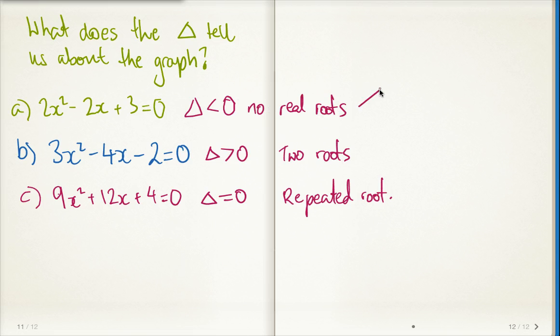So doesn't cut x-axis when we sketch it. 2 roots: 2 x-intercepts. What about this, the repeated root? Let's have a look.